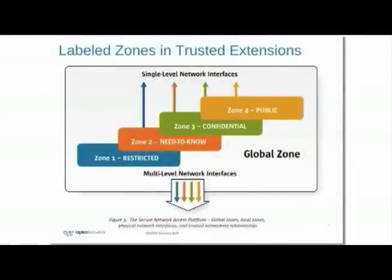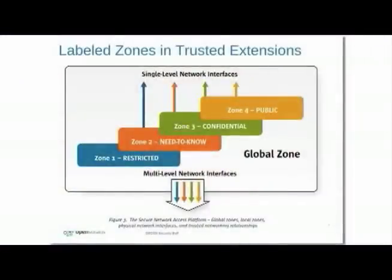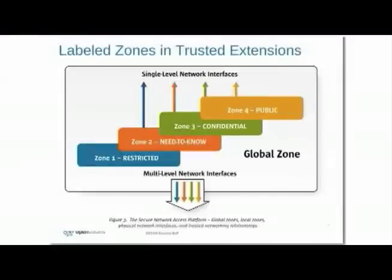Another application of non-global zones is their use in Trusted Extensions. Trusted Extensions is a special configuration of Solaris in which zones are used to represent different sensitivities of data, where information is protected based on how valuable it is. This is often used in military and intelligence agencies where top secret and confidential information needs to be protected. We can isolate that information by its classification into corresponding zones and networks. Because of the features of zones, we can ensure that information cannot flow between label boundaries — covering process communication, network communication, file system communication, and all operating system services.